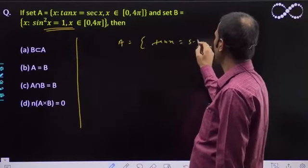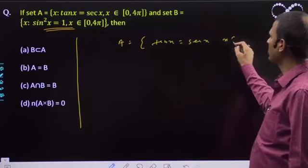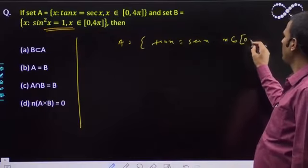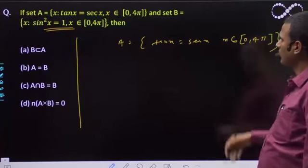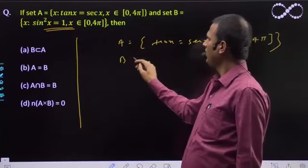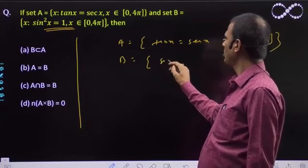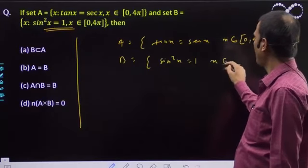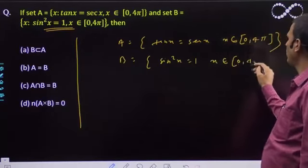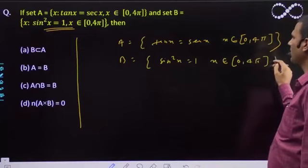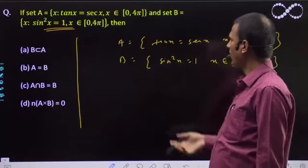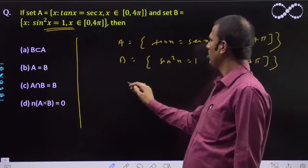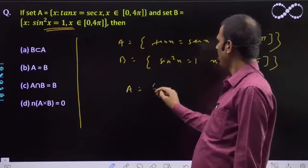tanx = secx and x belongs to closed interval [0, 4π]. And set B needs to be solved: sin²x = 1 and x belongs to [0, 4π]. We need to see how many elements x satisfy this. Those will be the values. So let's solve set A.